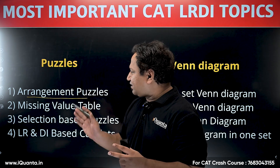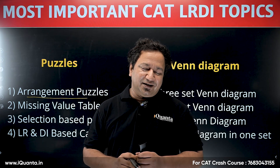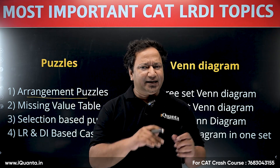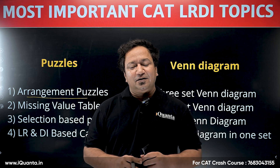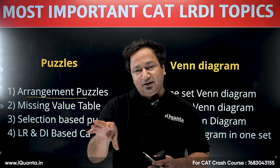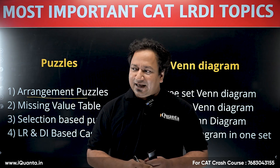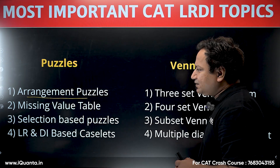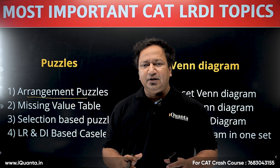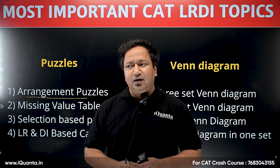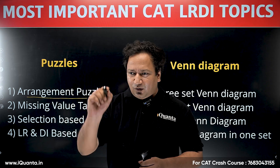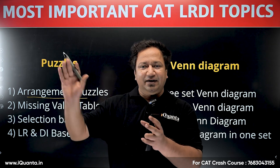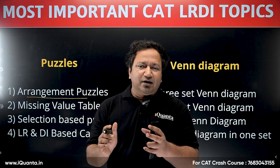The famous arrangement puzzle was made by Albert Einstein in the 1930s and was said to be solvable by only one percent of people at that time — not now. That same Einstein puzzle in CAT today is considered very easy, which shows how much IQ or the education system has developed. Next is the missing value table: for example, in an IPL scenario, Virat Kohli faced 50 balls and hit 70 runs — some values are missing and you must fill in the tables based on given statements.